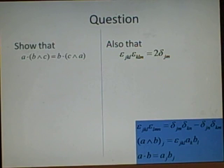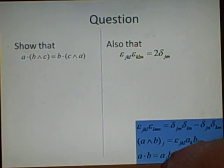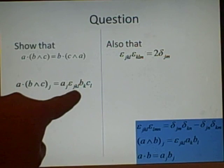I've got the rules down here to help. Show that a dot b cross c equals b dot c cross a. Now we've got this rule here, and this rule here. So we'll have aj, let me show it here, aj, and then the rest of this, because our b is just being replaced by this.